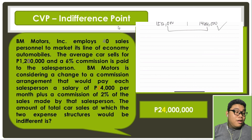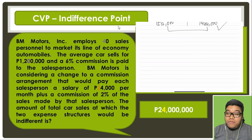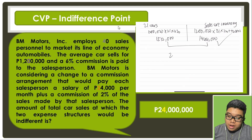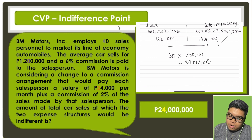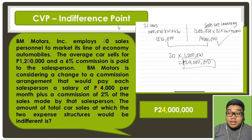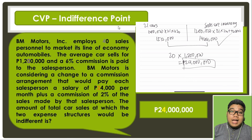That 24,000,000 pertains to 20 cars multiplied by 1.2 million, which equals 24,000,000. That ends our discussion for cost-volume-profit analysis.